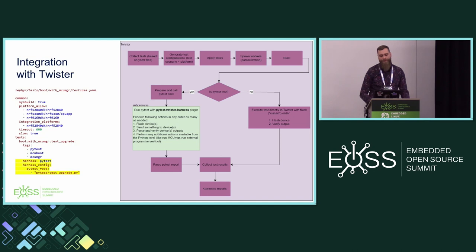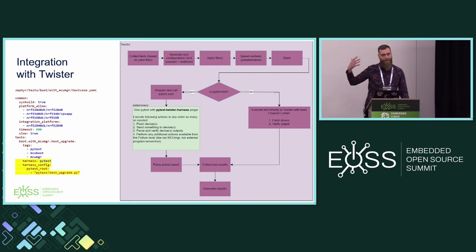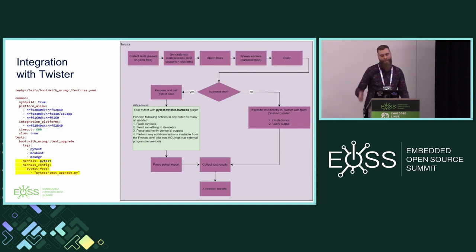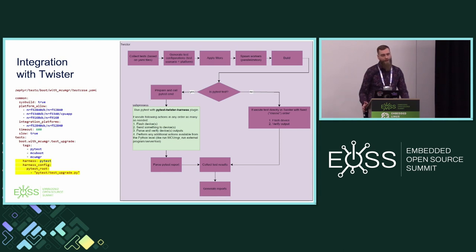On this slide I wanted to present the general idea behind how PyTest was integrated with Twister itself. This block presents the generic workflow of Twister: it first collects tests based on the YAML files, then generates test configurations, applies filters, spawns workers, and starts the cycle where the application is built, executed, and verified. When we reach execution, the main question is asked: is it a PyTest test or not? If it is, Twister will prepare and call a specific command for PyTest as an executor. PyTest will flash the device, interact with it, collect results, and prepare the JUnit XML report. Twister then reads that report and parses the results.